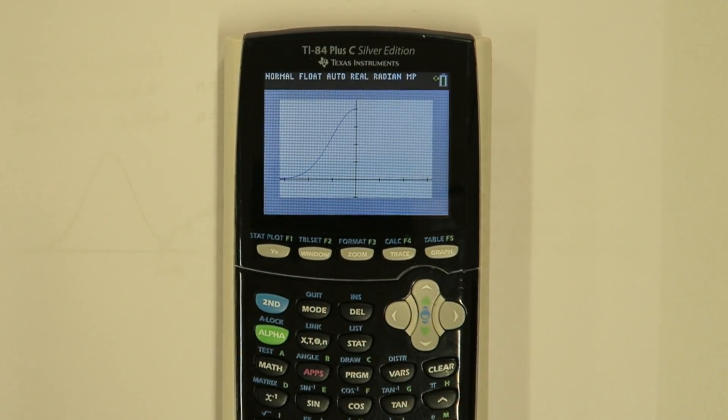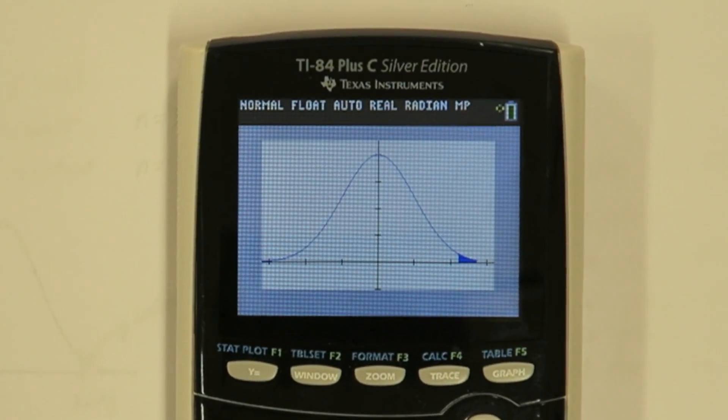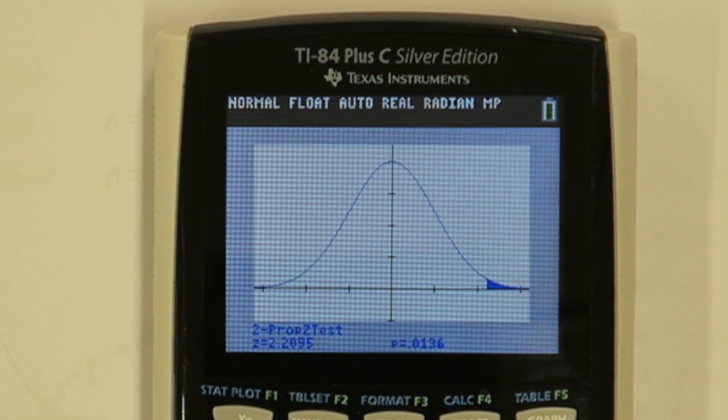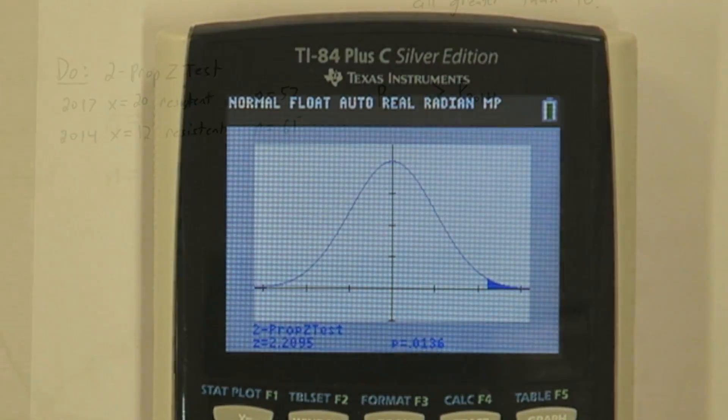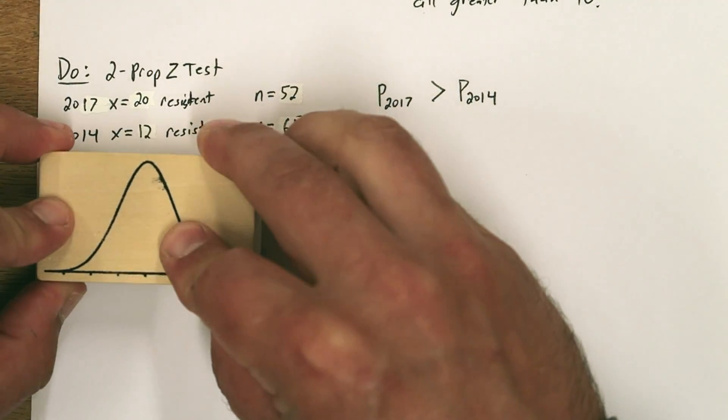When we click draw, we get this display. It shows us the normal distribution, a test statistic, and a p-value. It's a good idea to copy all of this into your response.